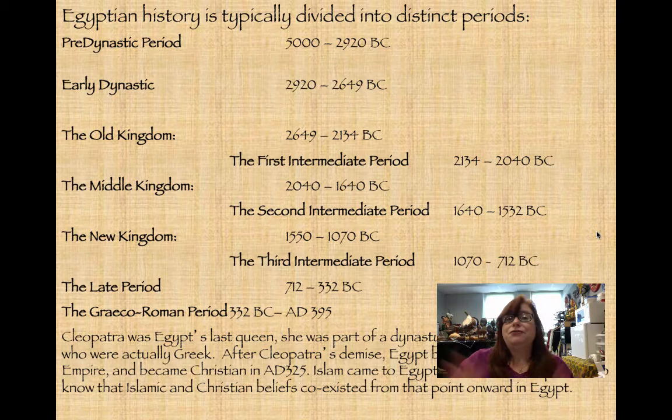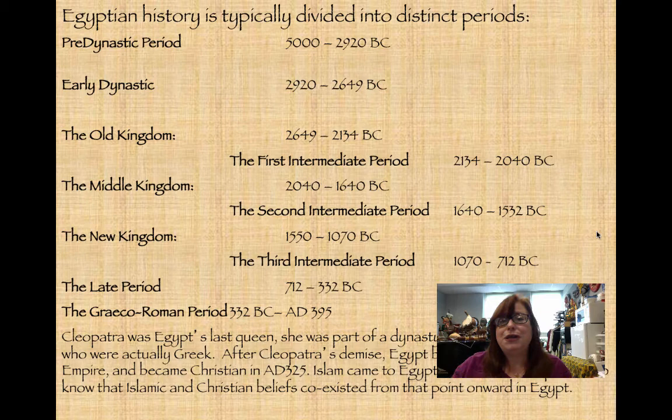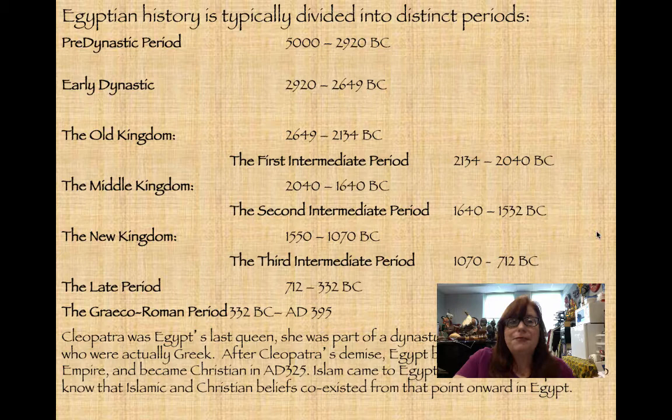The early dynastic period is when Egypt starts to be unified. Up until this point there were small kingdoms up and down the Nile, each with their own kings. Slowly over time Egypt became unified, bringing together Upper Egypt and Lower Egypt. That period runs from 2920 to 2649 BC.